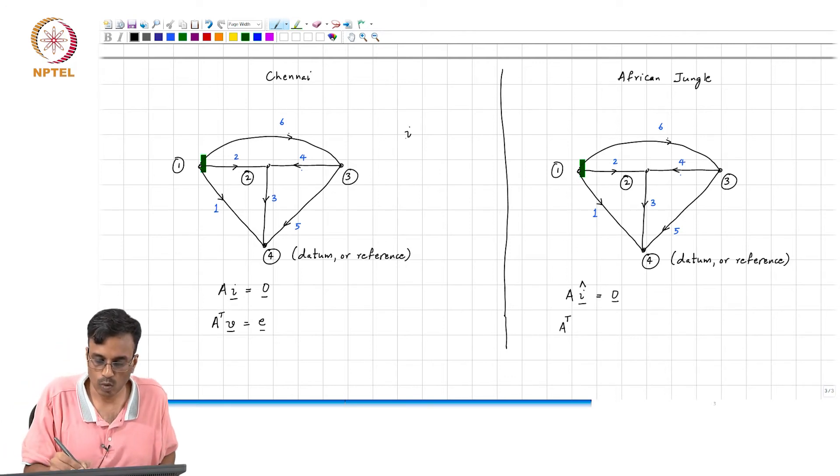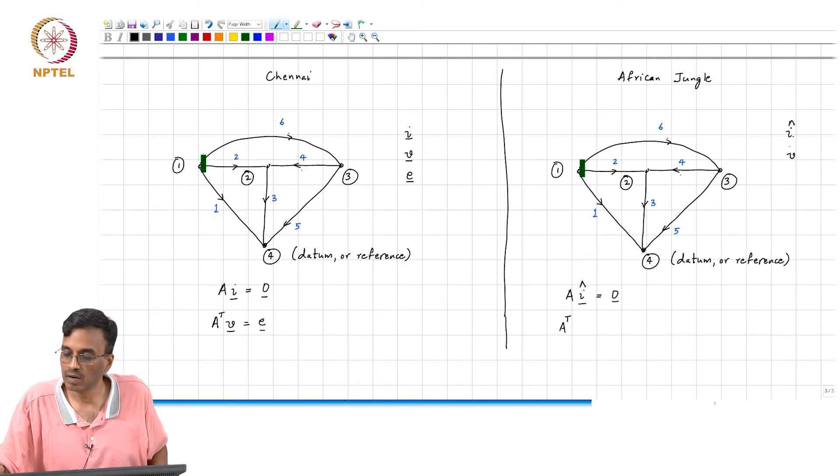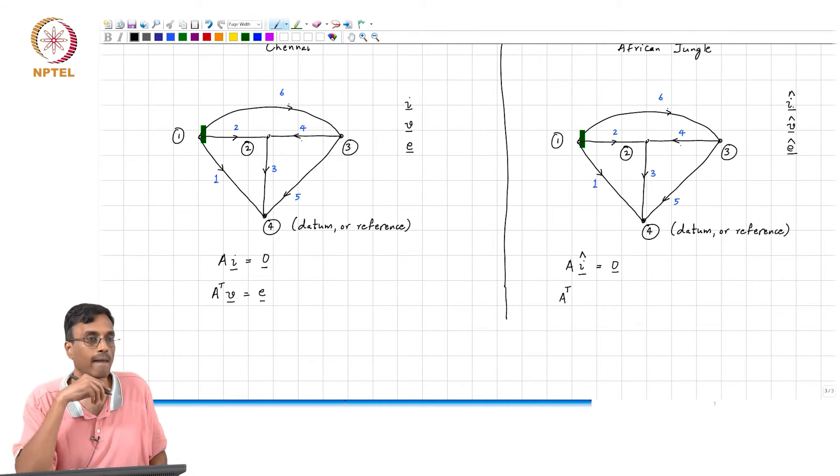And what comment can we make about this KVL here? So, the branch current vector, and the branch voltage vector, and the node voltage vector here are I, V and E. Here, they are I hat, V hat, and E hat. So, what comment can we make about A transpose times V hat equal to E hat?